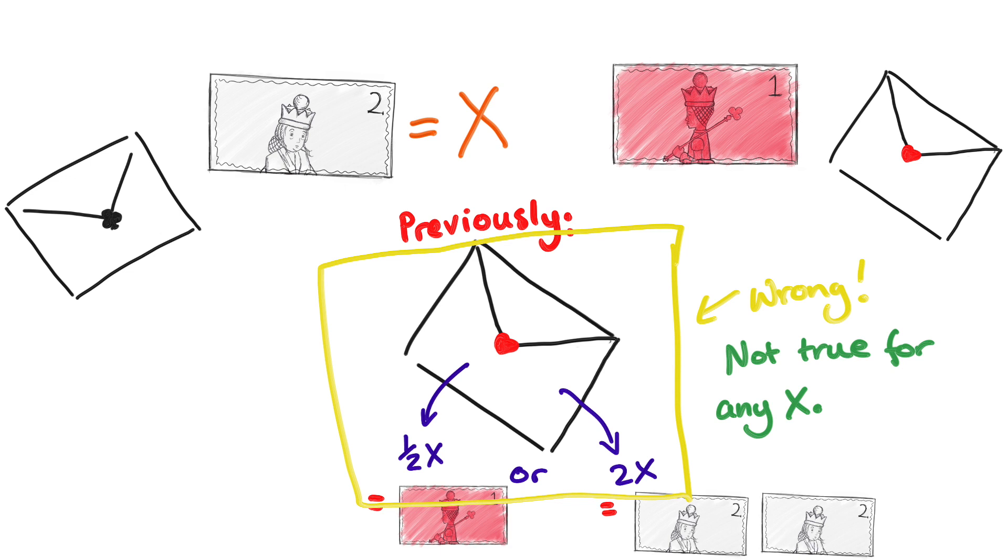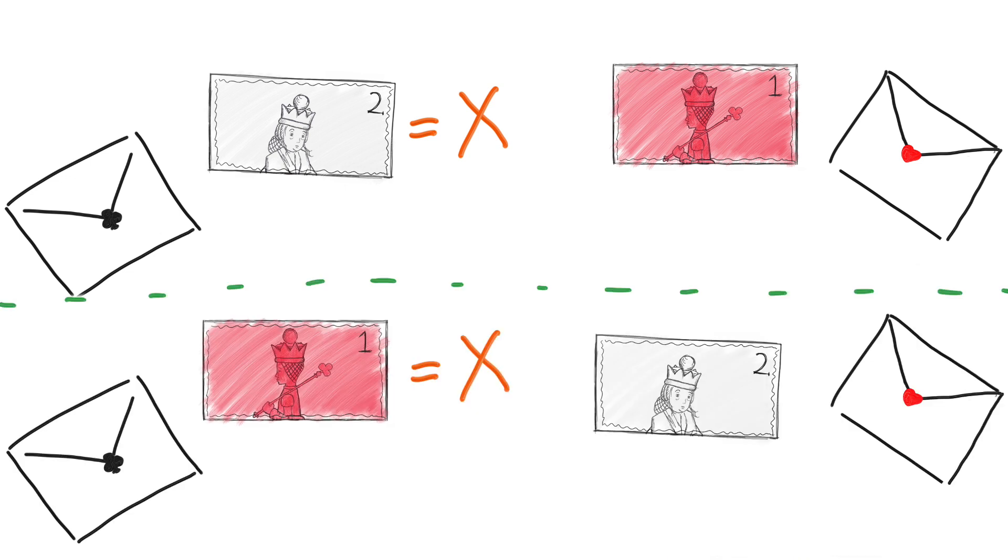How do you do this correctly then? You don't know which of the two cases you're actually in, and so what you should do is average over the amount in the other envelope in each of those cases. That gives you a value of 1.5 for the expectation value, halfway between the two possible values.